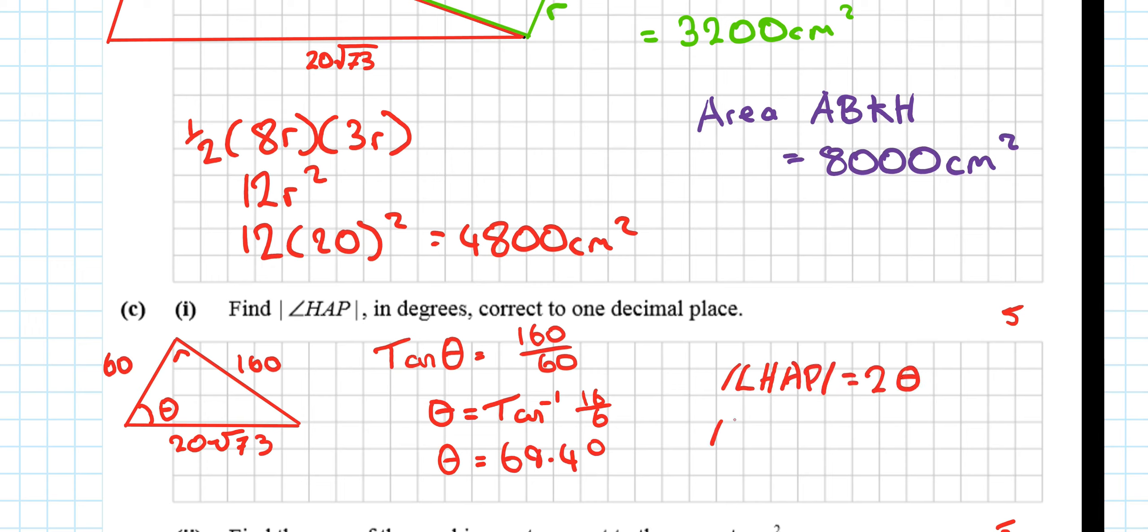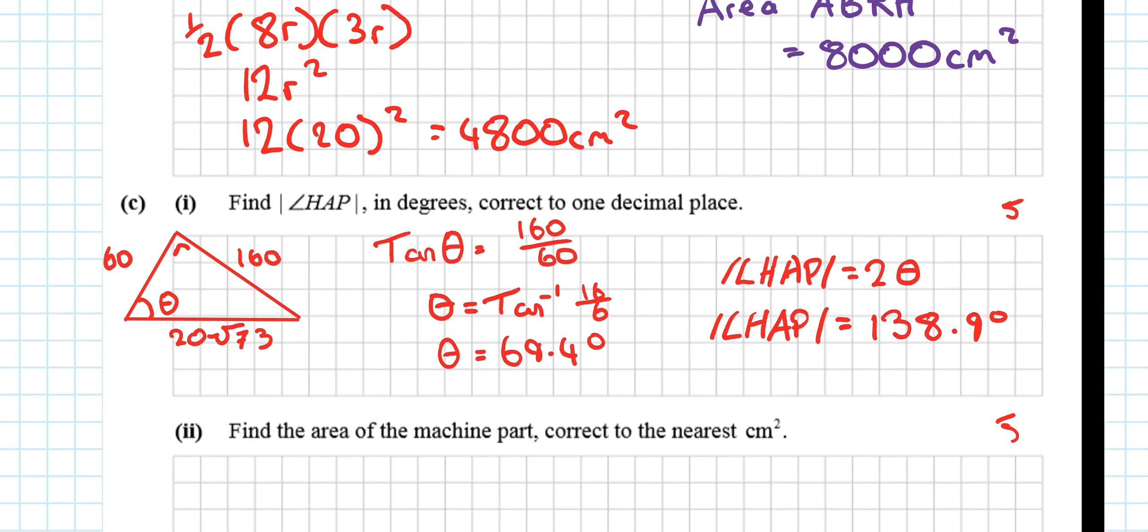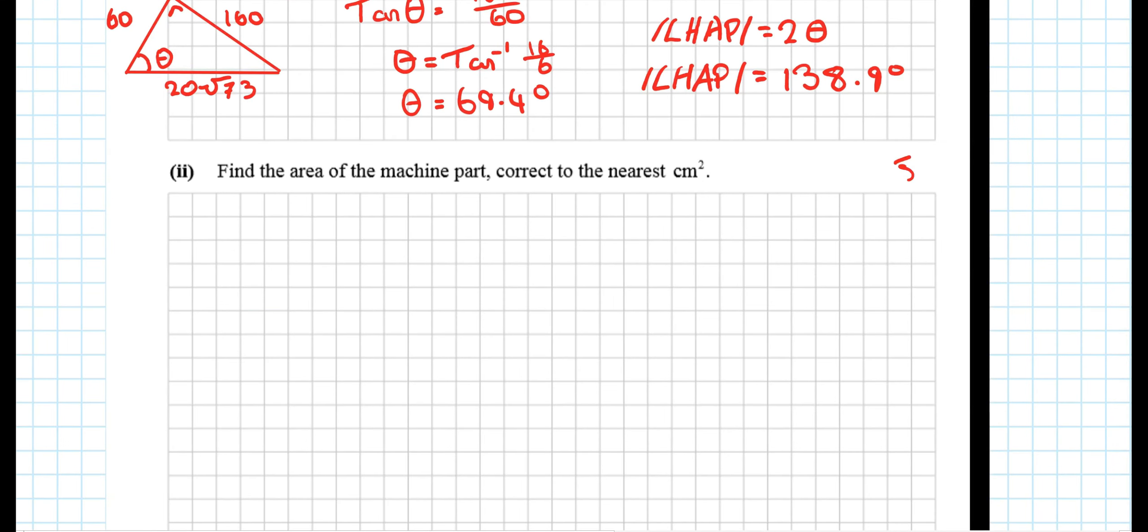So, then the angle HAP is twice that, as I said. 2 theta. The angle HAP is equal to 138.9 degrees to one decimal place for five marks.